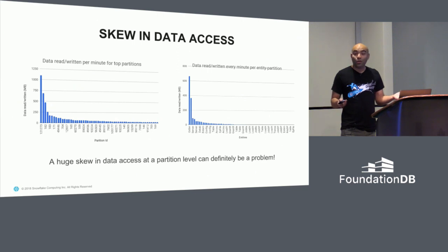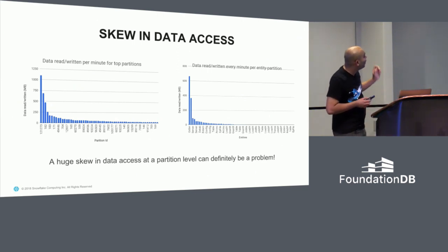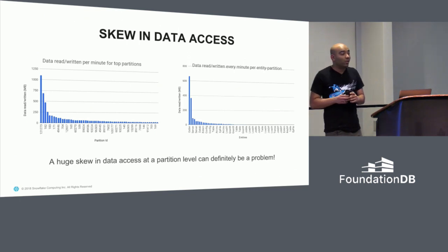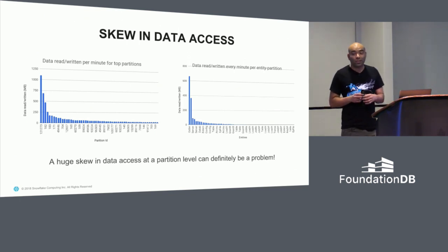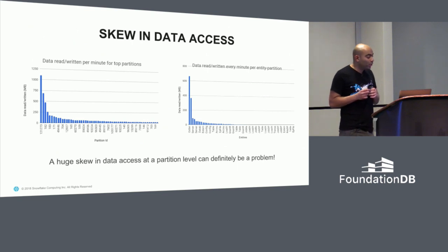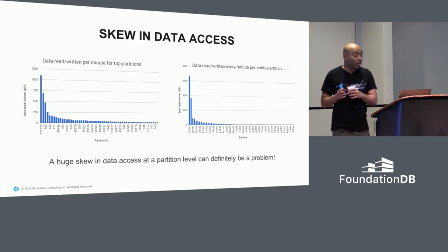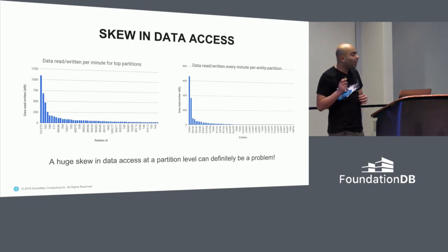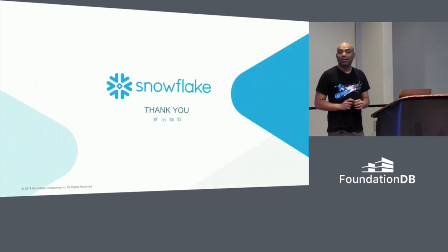You address this in various ways — the first two or three data access patterns here are clearly egregious and need fixing. You can cache, you can fix your accesses, but if you're going to access close to a gigabyte a minute, then at least in our system you will cause problems. And that's it. Thank you.